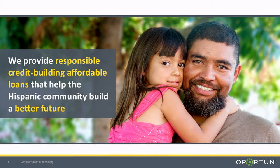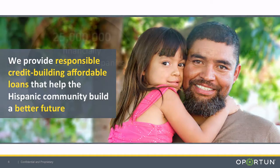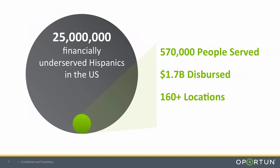What I've asked you to imagine is unfortunately a reality for millions of people every single year. What we've chosen to do at Opportune is dedicate ourselves to providing responsible, credit-building, affordable loans that help the Hispanic community build a better future. According to FDIC data, approximately 25 million Hispanics every year fall into the category of being financially underserved, finding themselves in these difficult moments without the capital they need to move forward.